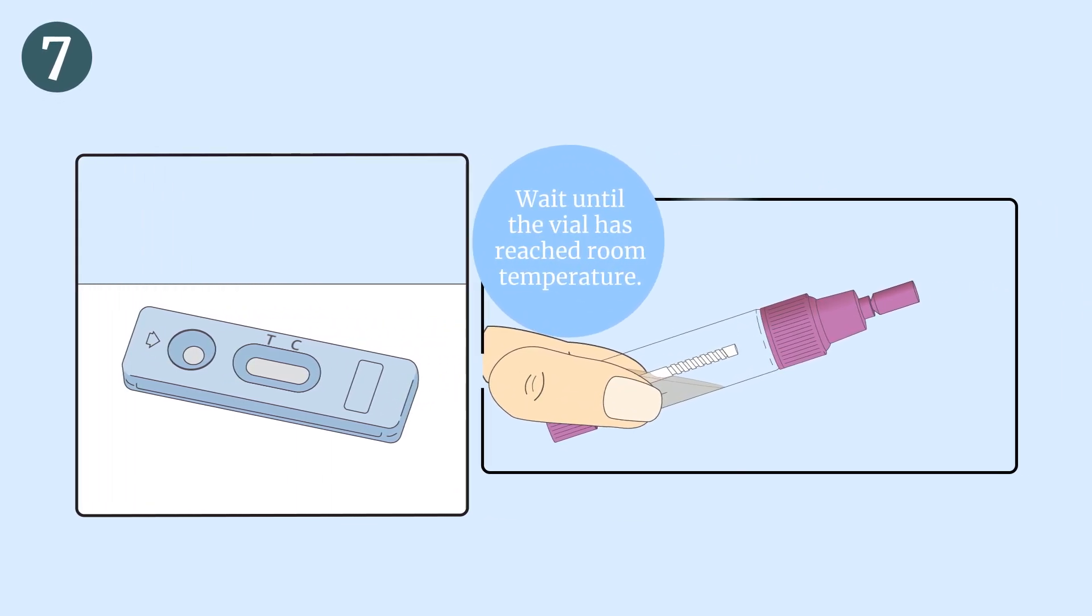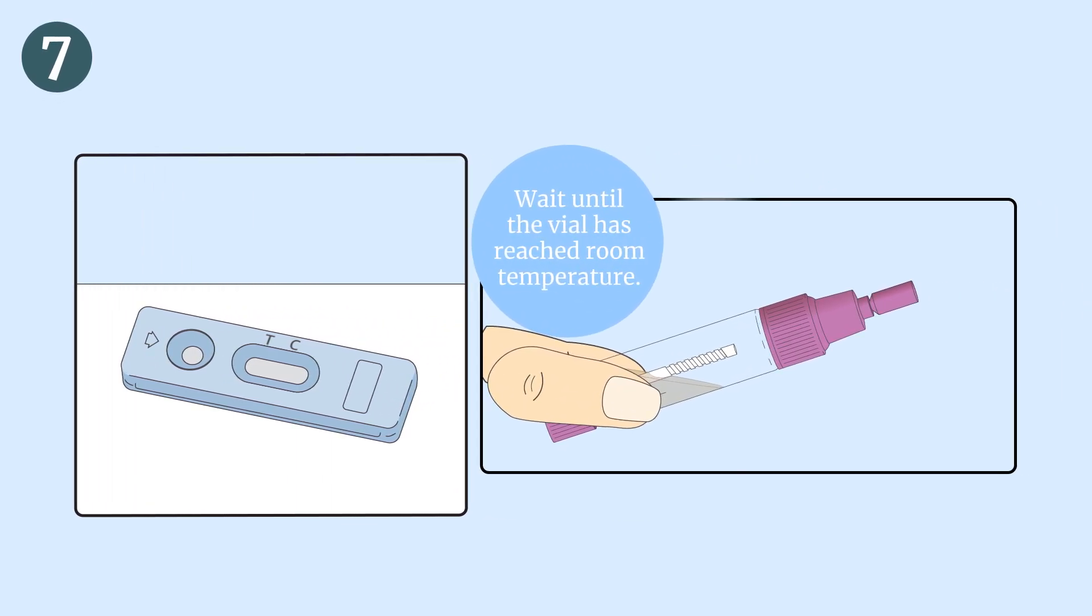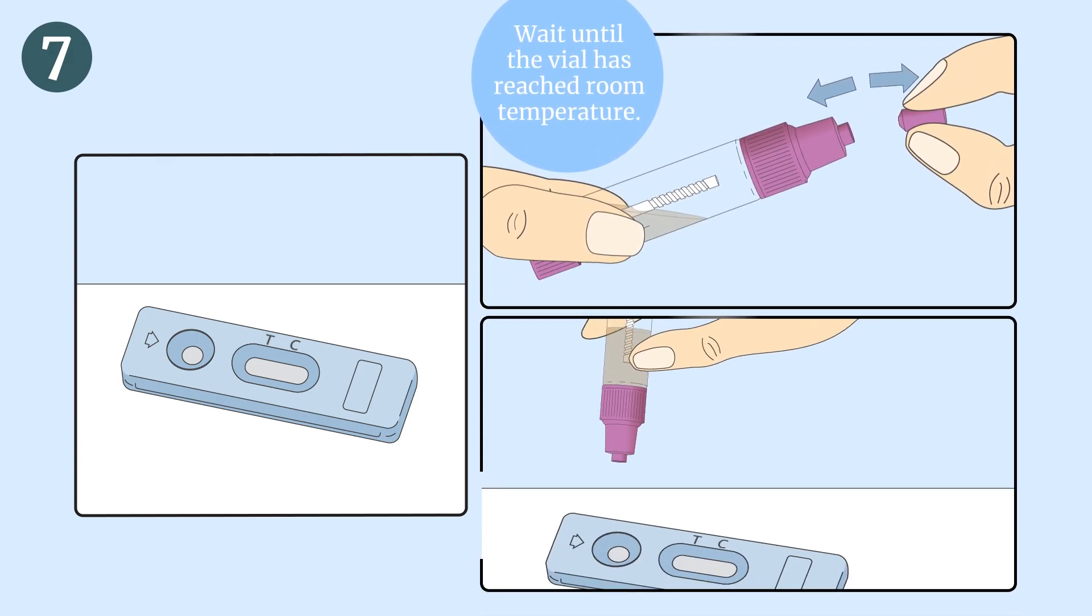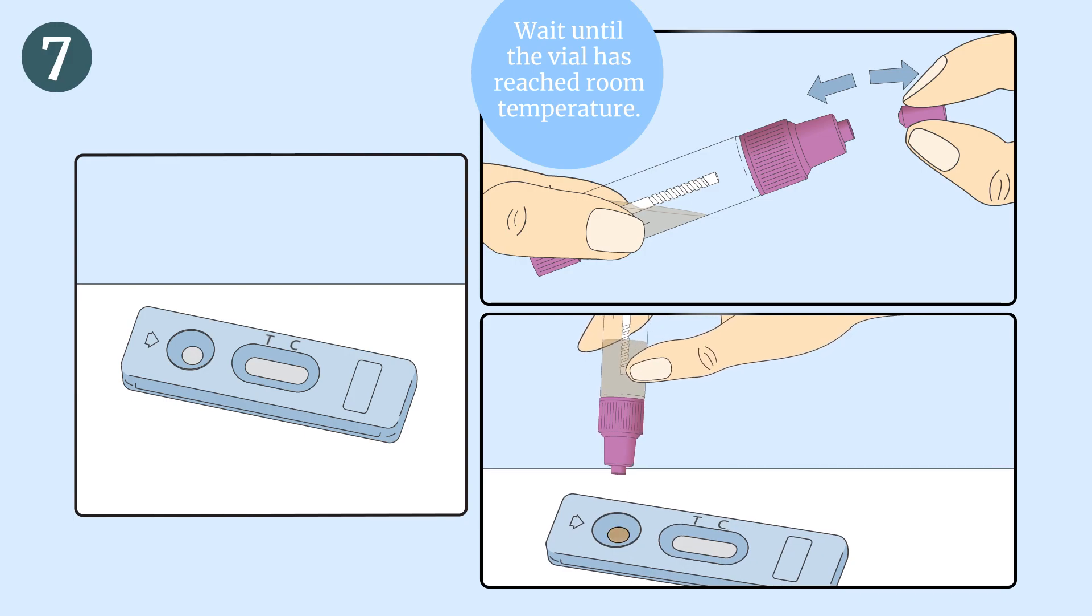Wait for the sample dilution vial to reach room temperature before performing the test, then proceed to break the purple tip. Place the test device on a flat surface and press the vial body to add exactly five drops of the extract, with an interval of two to three seconds between each drop, into the sample well.